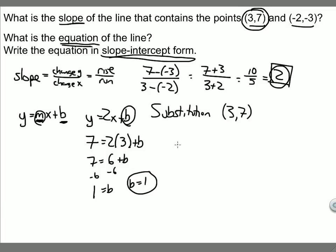So going back to my equation, I now know that y equals 2x, there's the slope, plus 1. So here's my equation.